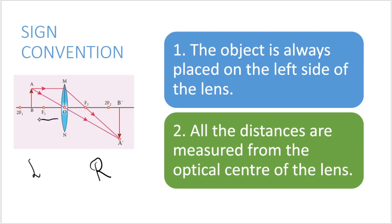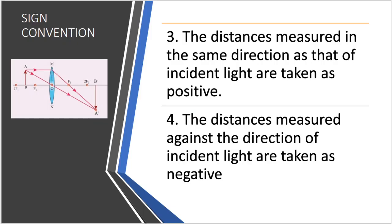The object is placed on the left side of the lens, and the distance is measured from the optical center to the object. The third convention is: distances measured in the same direction as the incident light are taken as positive. The incident light travels from left to right, so all distances to the right of the lens are positive, and all distances to the left are negative.